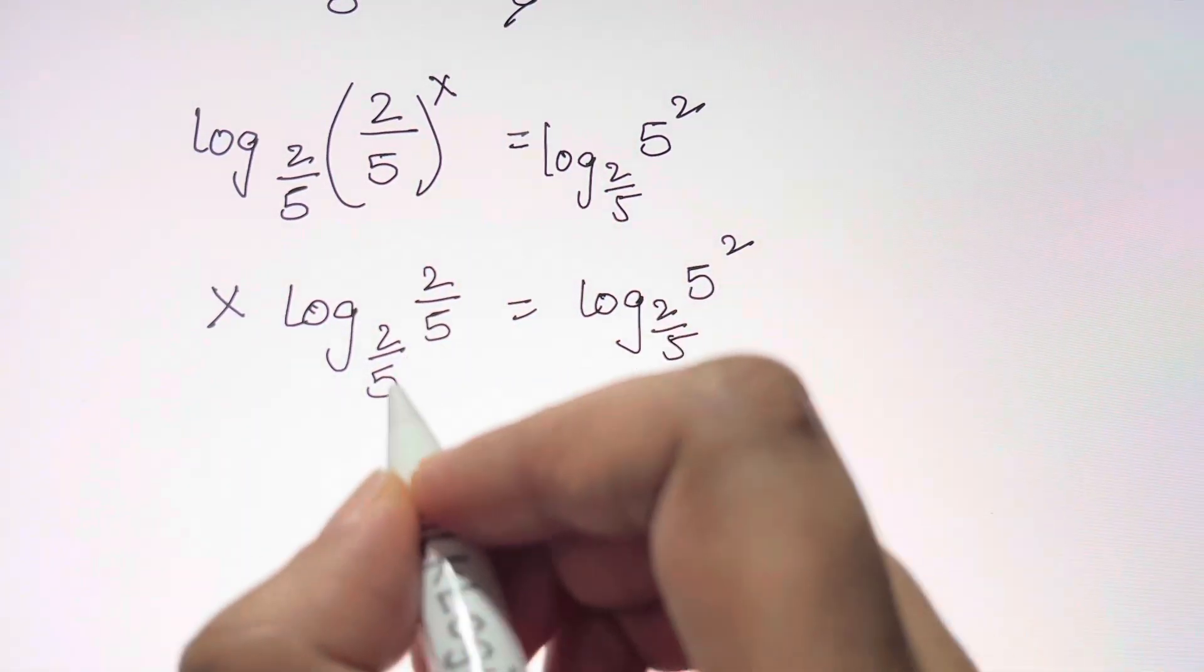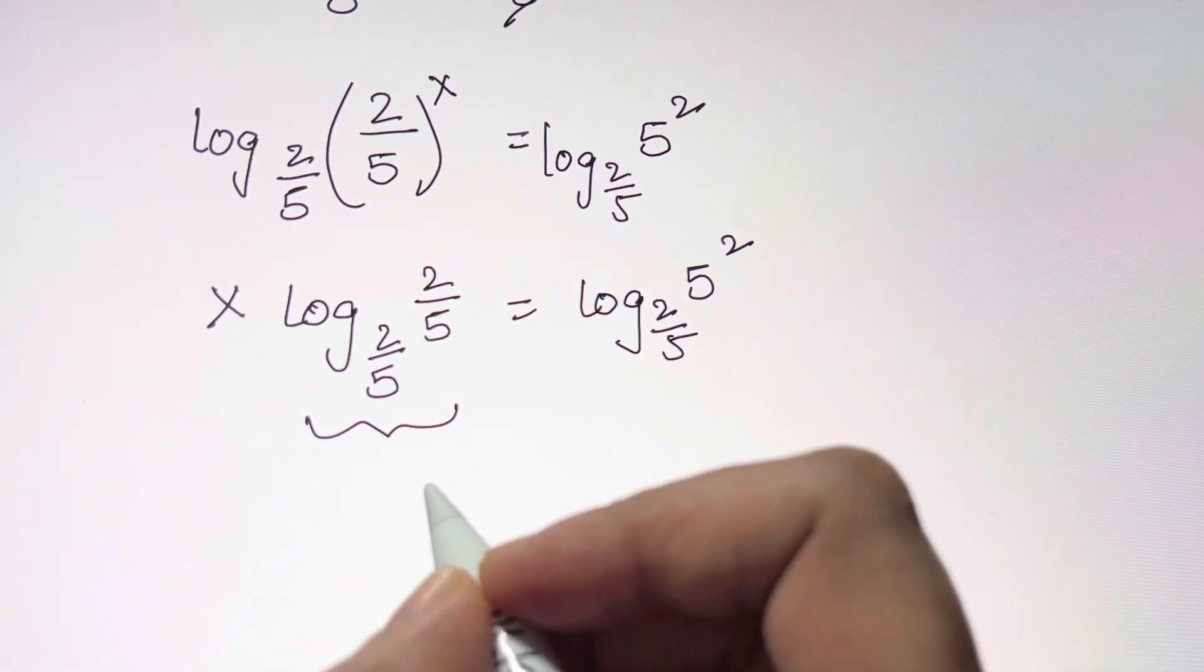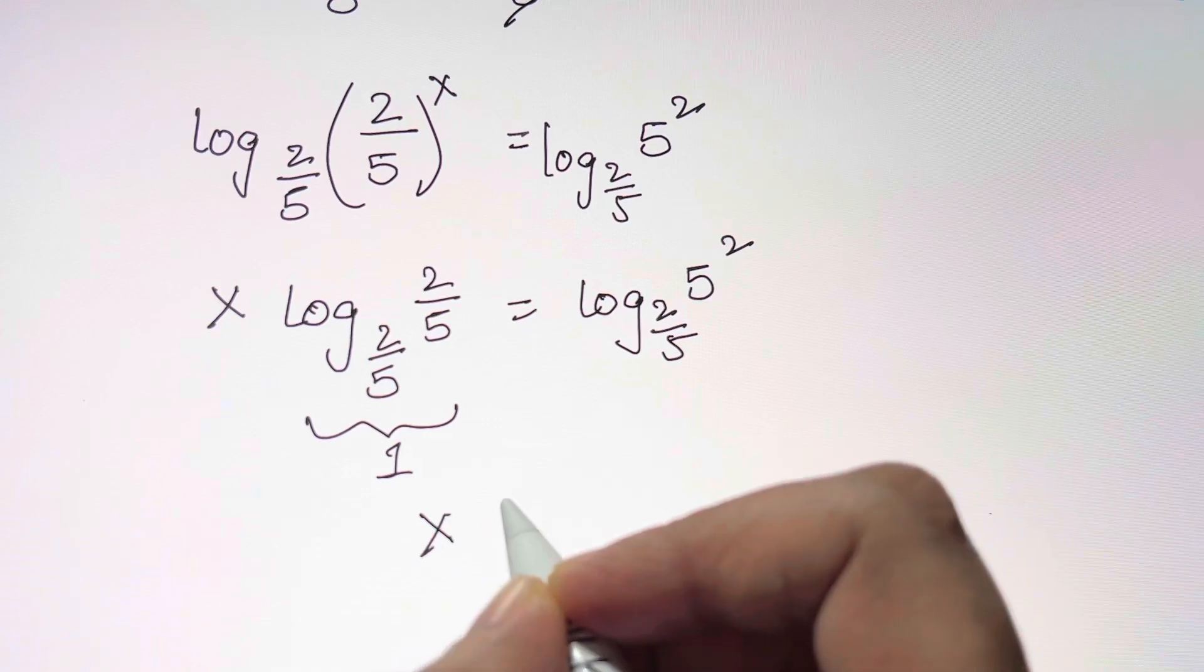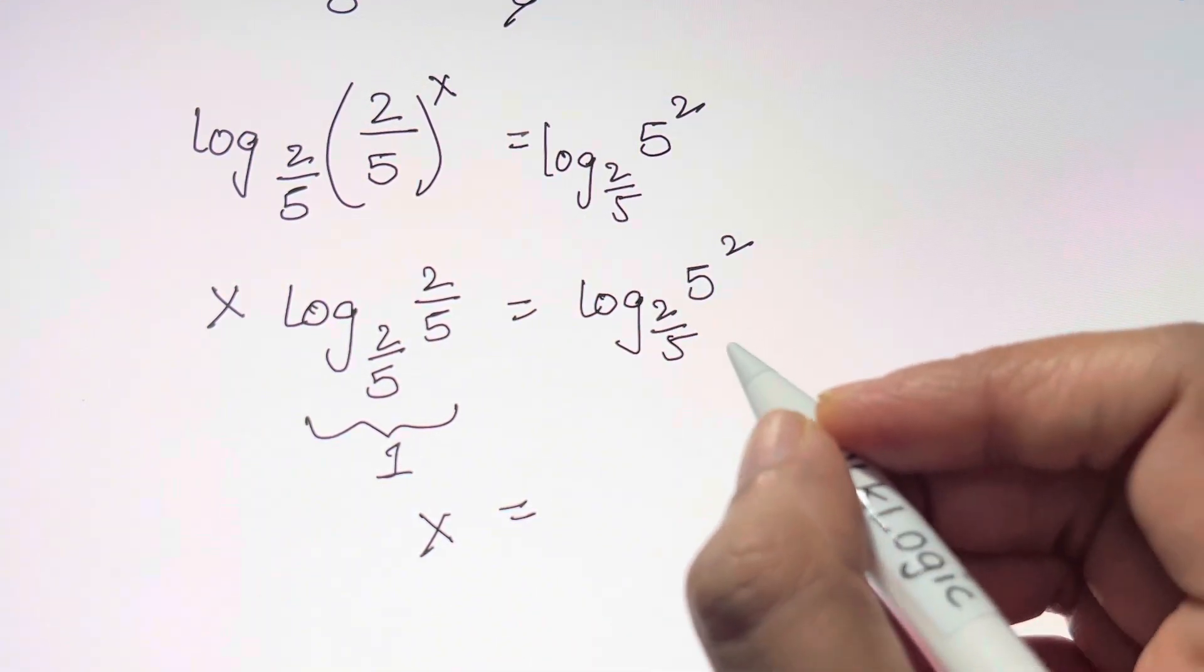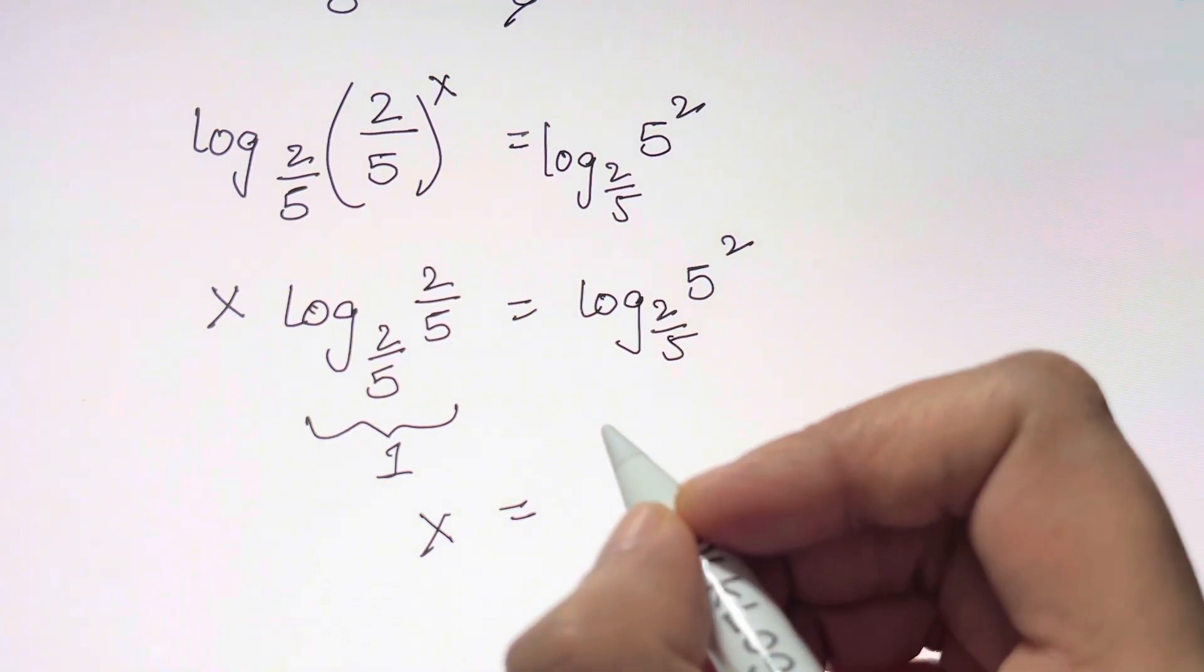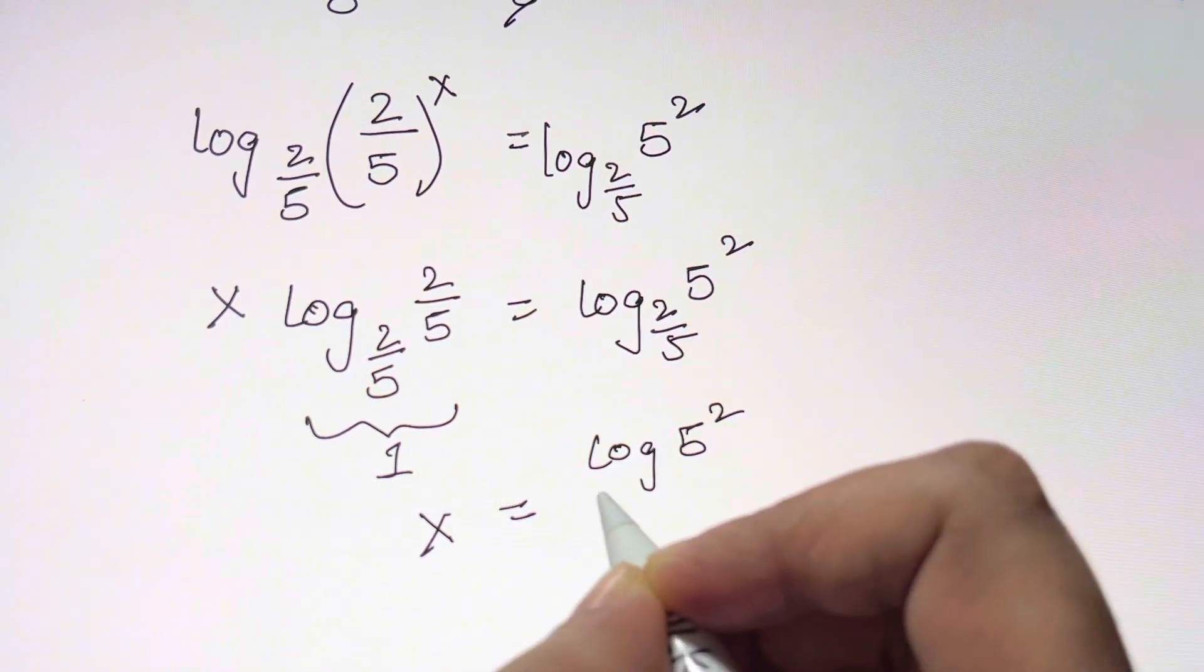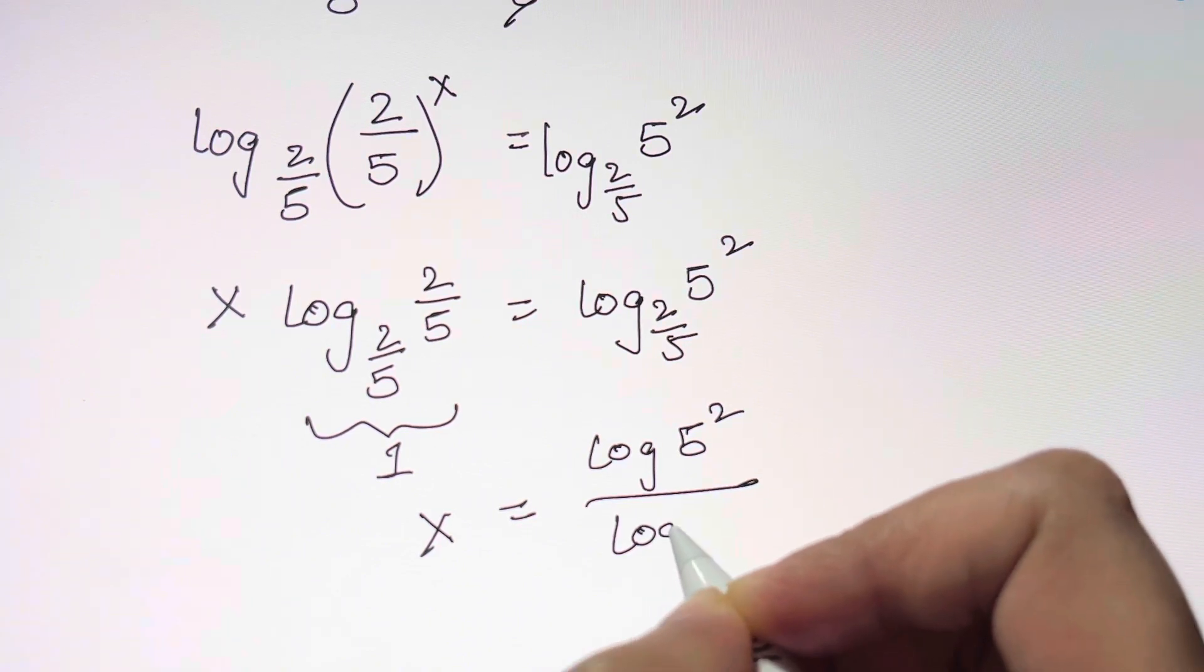Now here, this term is equal to 1, so this is x times 1. X is equal to log 5^2 base 2/5. Now you can write it this way: log 5^2 over log (2/5).